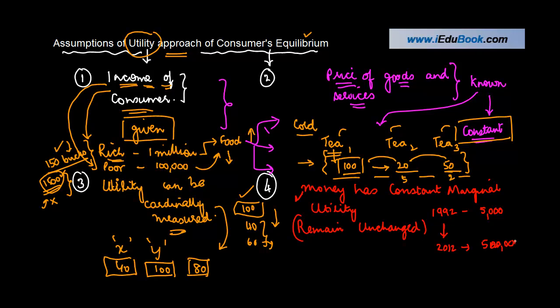With the same amount of money, you cannot buy the same quantity of gold. The value of money itself has changed. So as you switch between your consumptions calculating utility, the value of money has to remain constant. So these were the four assumptions of utility approach to the consumer's equilibrium.